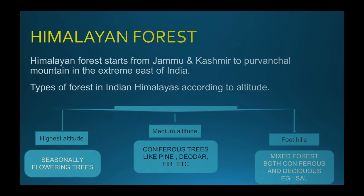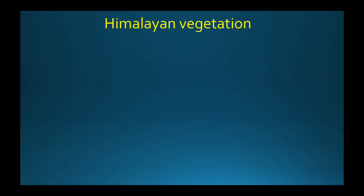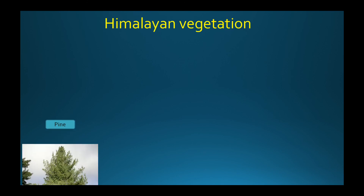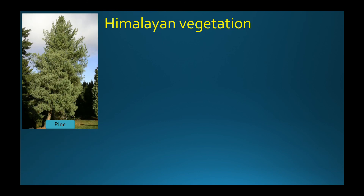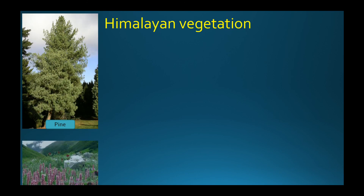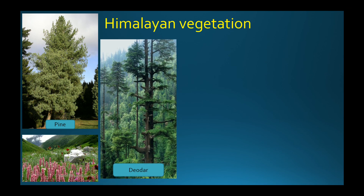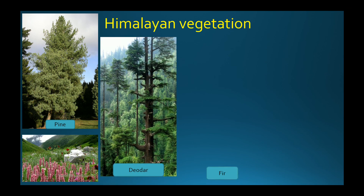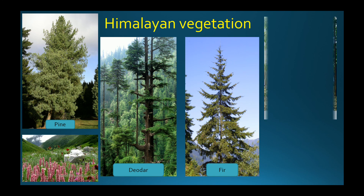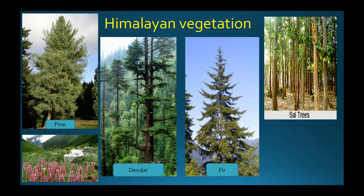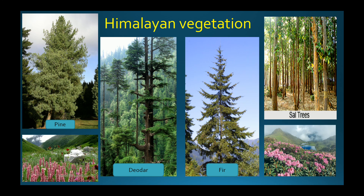Let us visualize Himalayan vegetation. The first is Pine. You can also see flowering plants. Deodar, Fir, Sal, and examples of flowering plants found at higher altitudes.